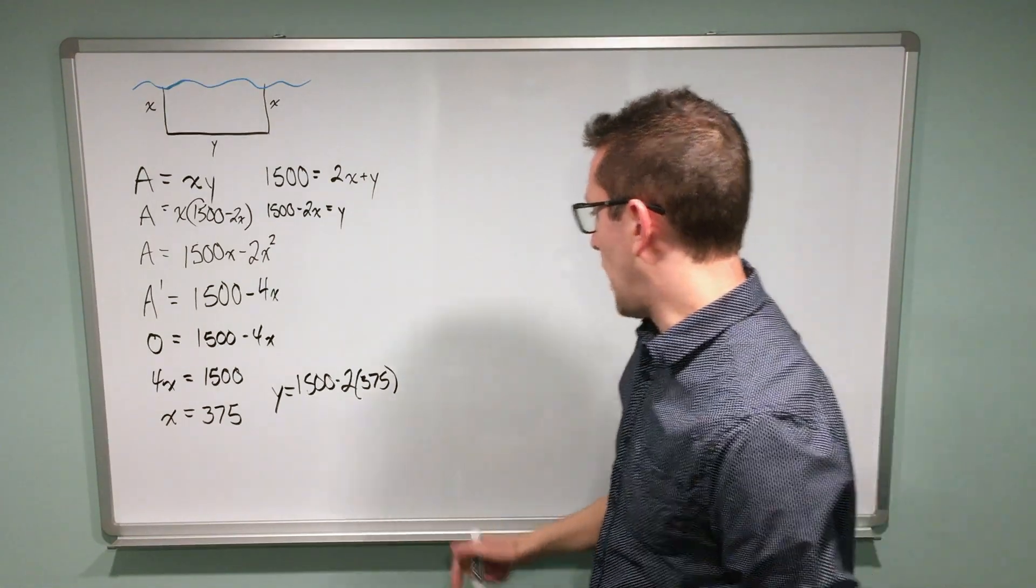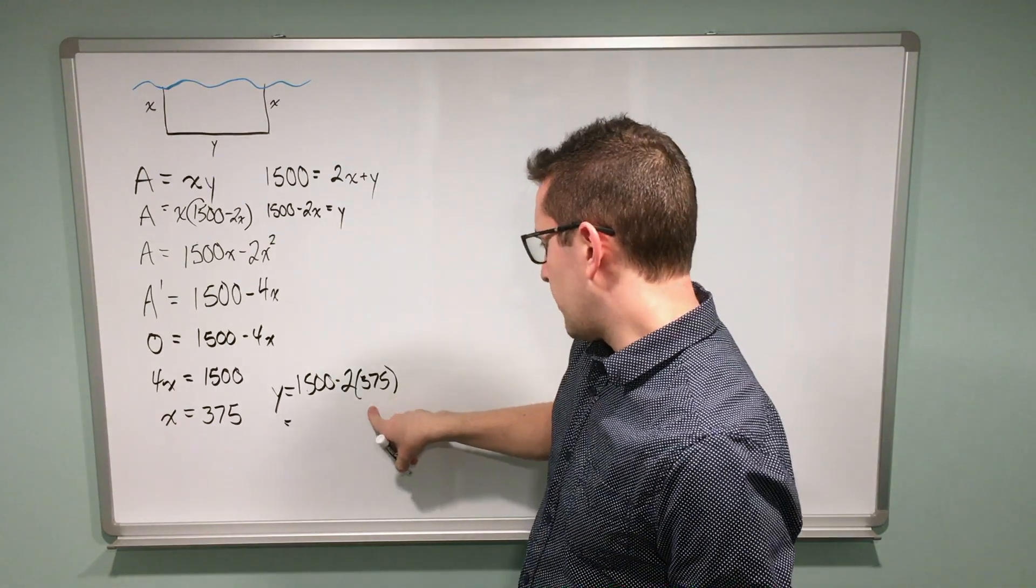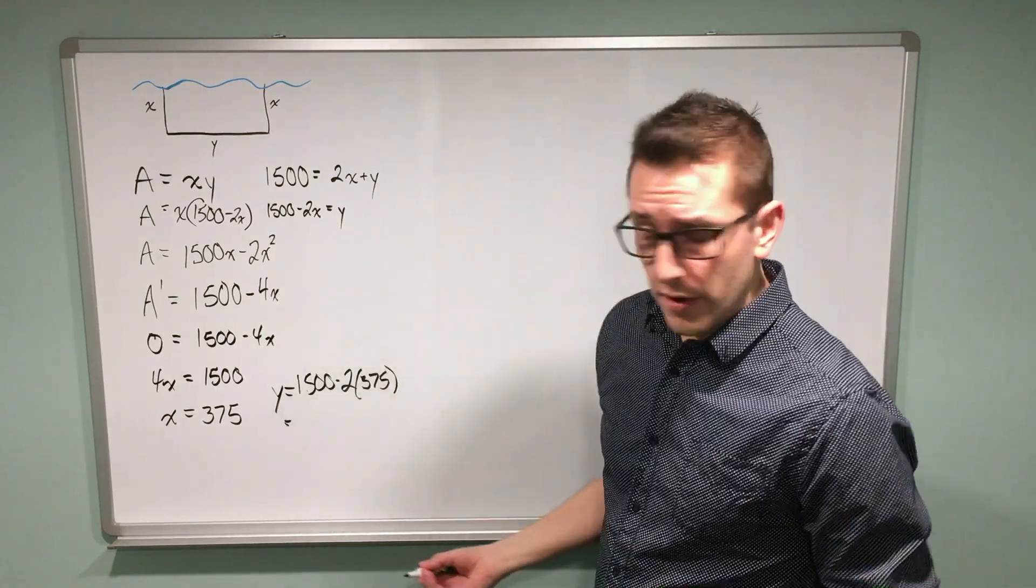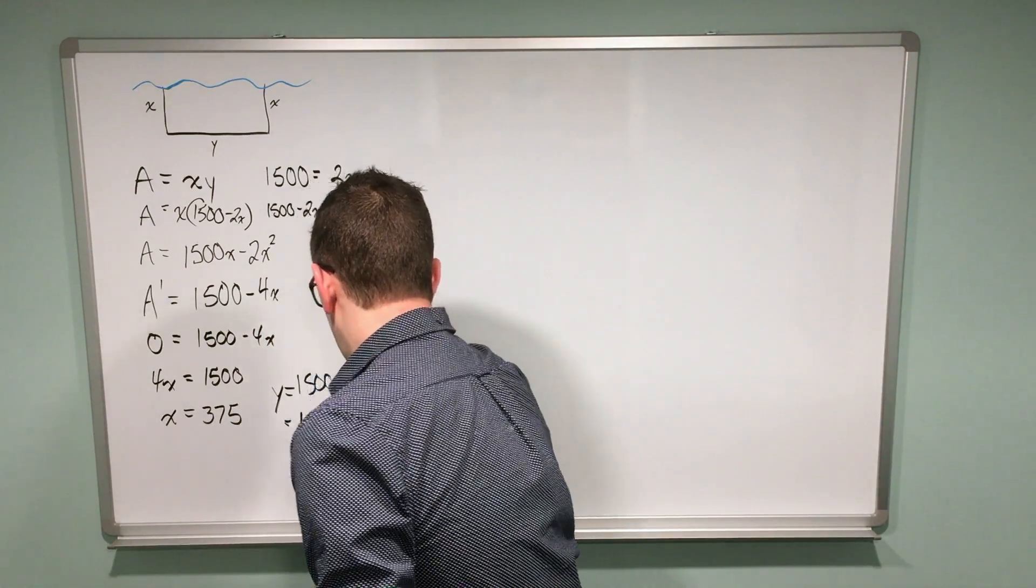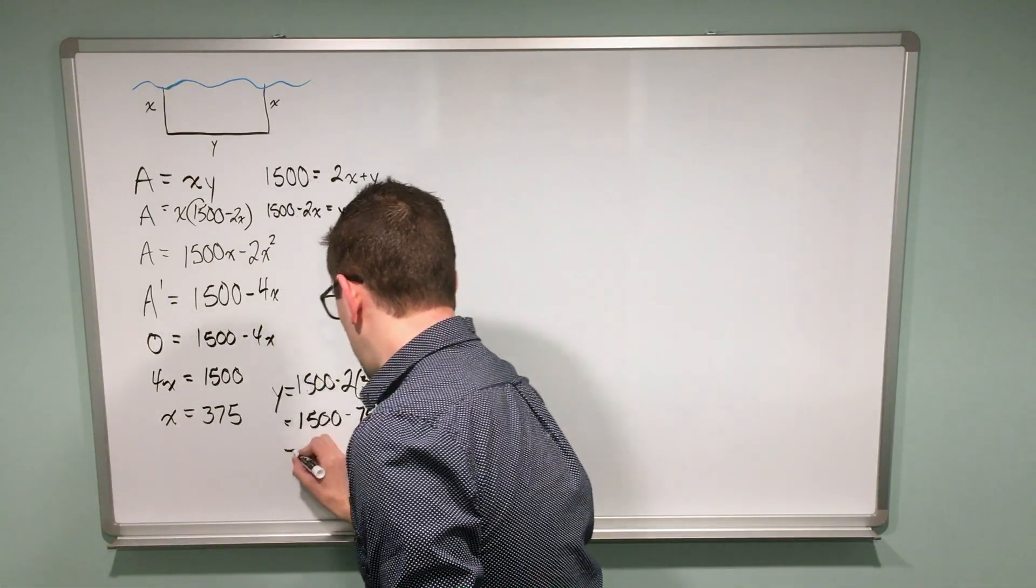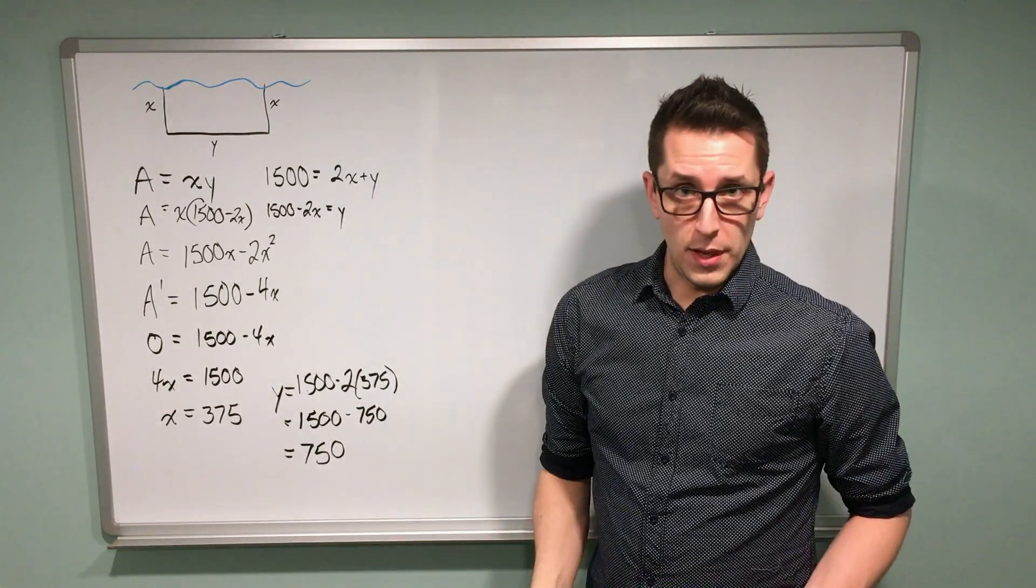Doing a little bit of quick math here, I've got 1500 minus 2 times 375. 375 times 2 is 750. If I subtract 750 from 1500, I end up with 750. So the length of my rectangular pen should be 750 meters.